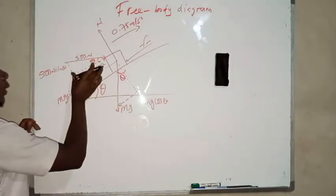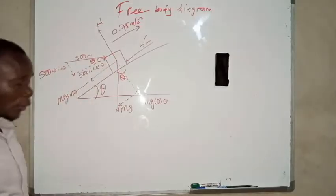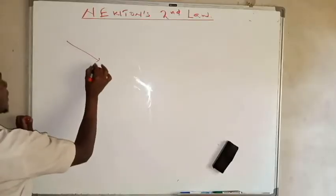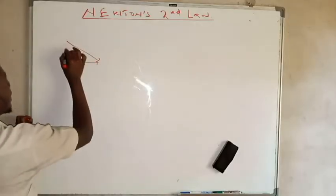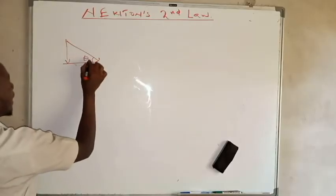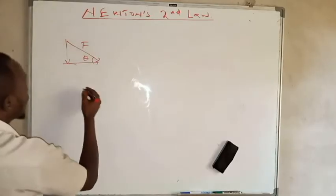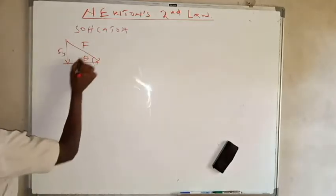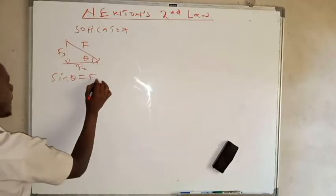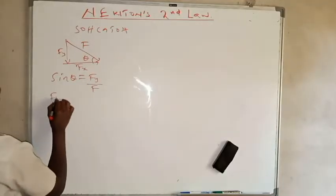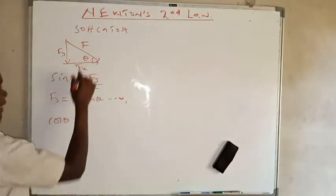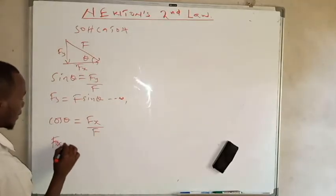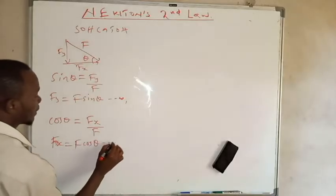We are going to resolve the 500 newton force into x and y components. Using SOHCAHTOA, sine theta equals Fy over F, so Fy equals F sine theta. For the x component, cosine theta equals Fx over F, so Fx equals F cosine theta.